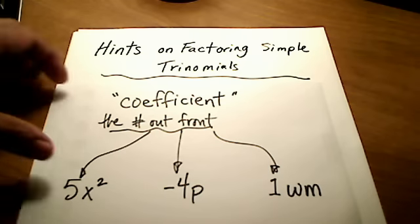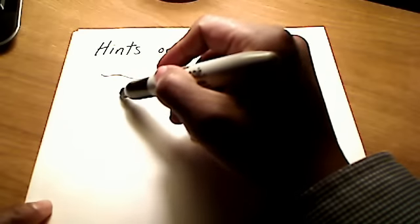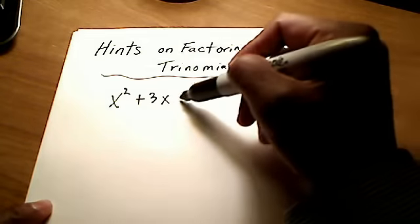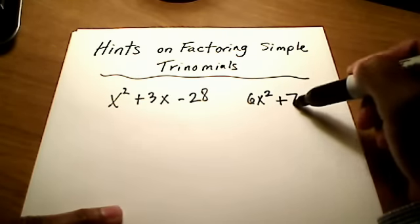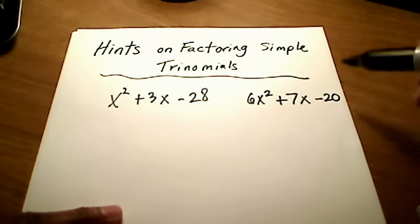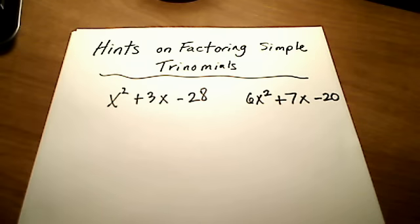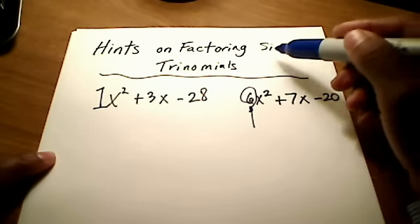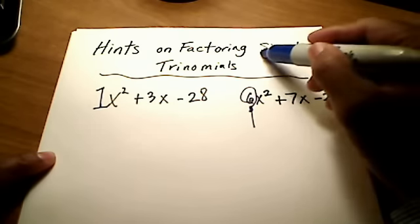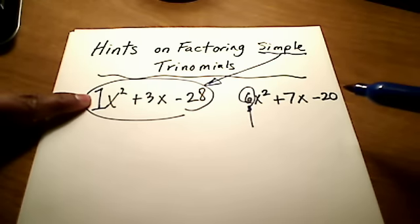So what I mean by a simple trinomial is simply this. A simple trinomial looks something like x squared plus 3x minus 28 — that's just an example. As opposed to something like 6x squared plus 7x minus 20. Notice that for that first trinomial, the leading coefficient — the number out front — is just a 1 for the x squared, whereas the second one has a leading coefficient of 6. Simple trinomials are ones where the leading coefficient is an understood 1, whether it's written in or not.